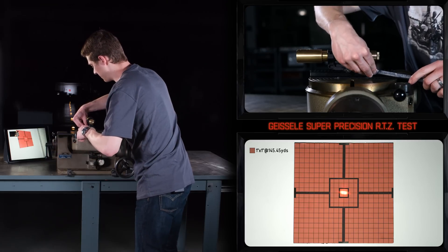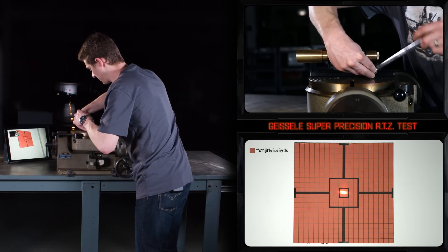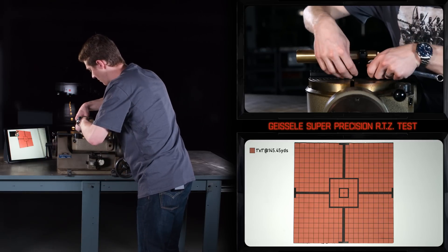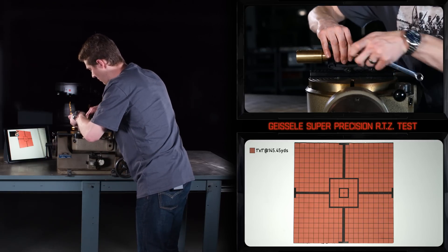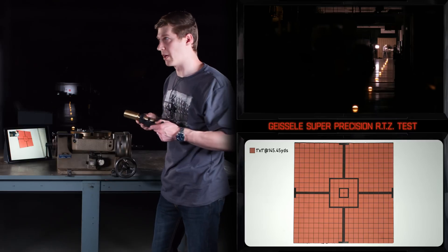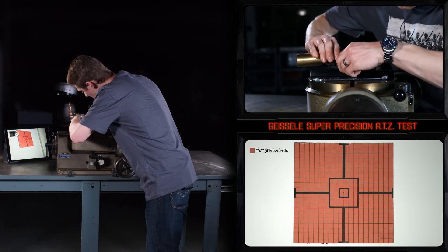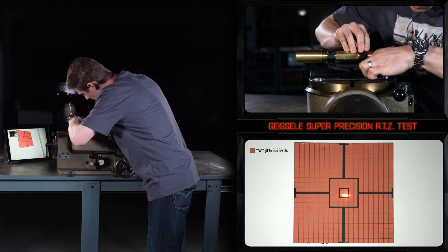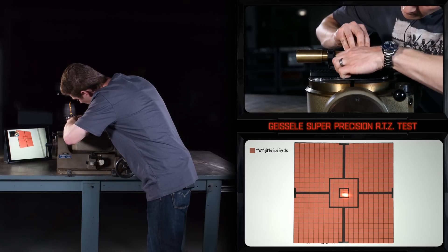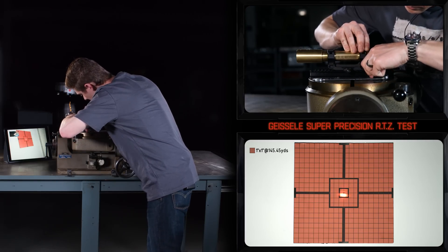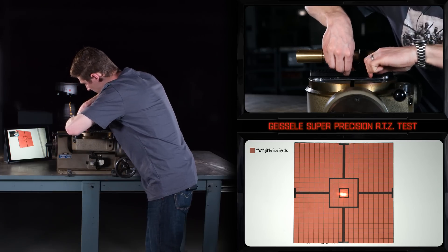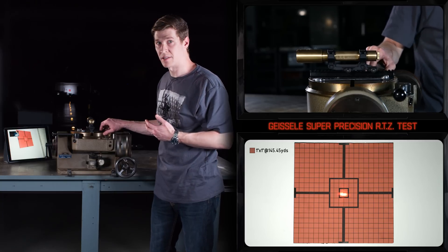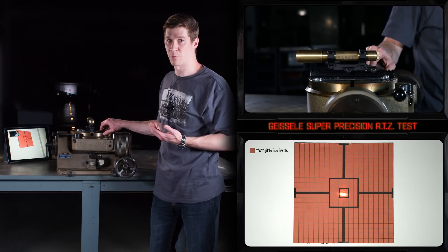Now I'm going to remove the mount. Mount removed. Now I'm going to reattach. Even with the mount attached only finger-tight, you can see the return to zero. As I said, the grids are one-inch and the target's about 140 yards away.